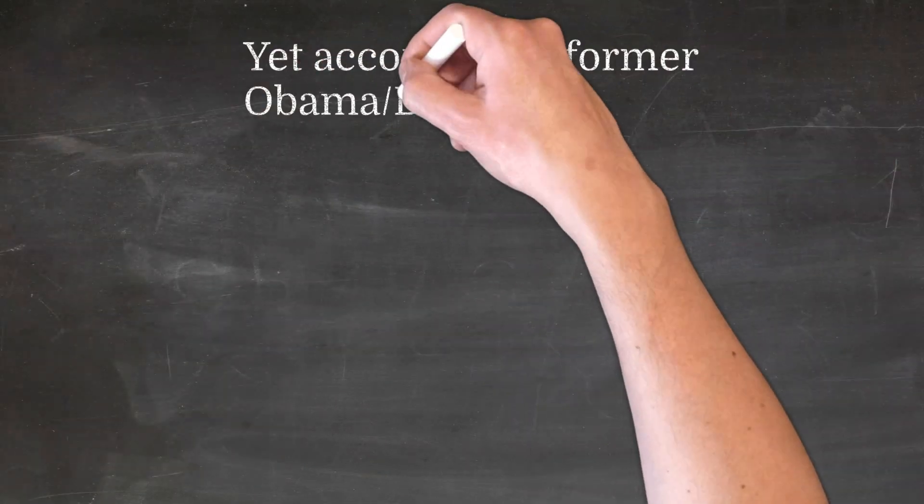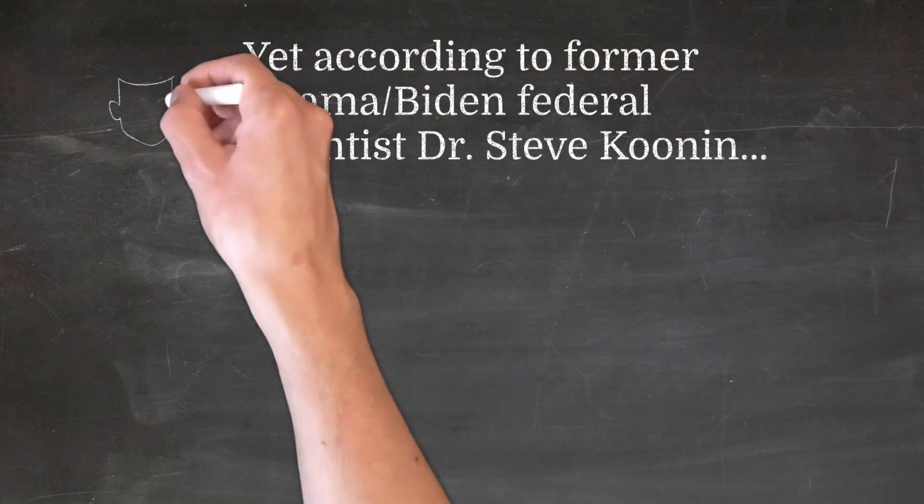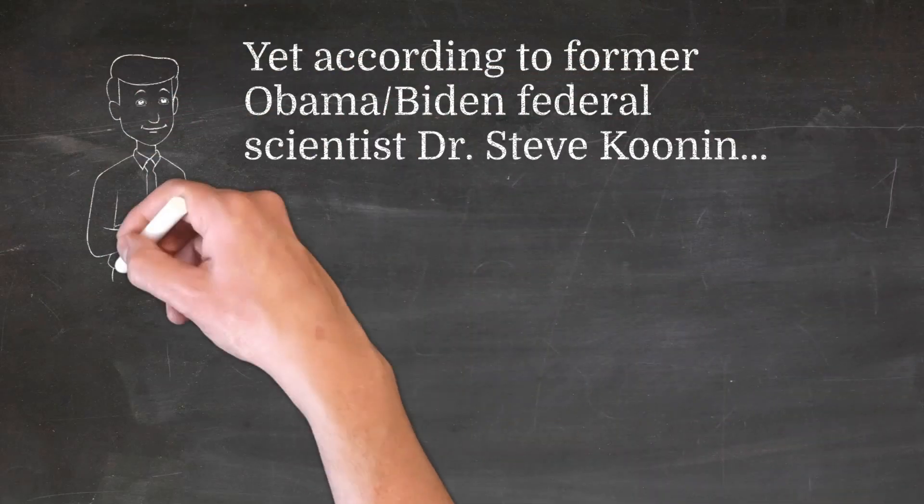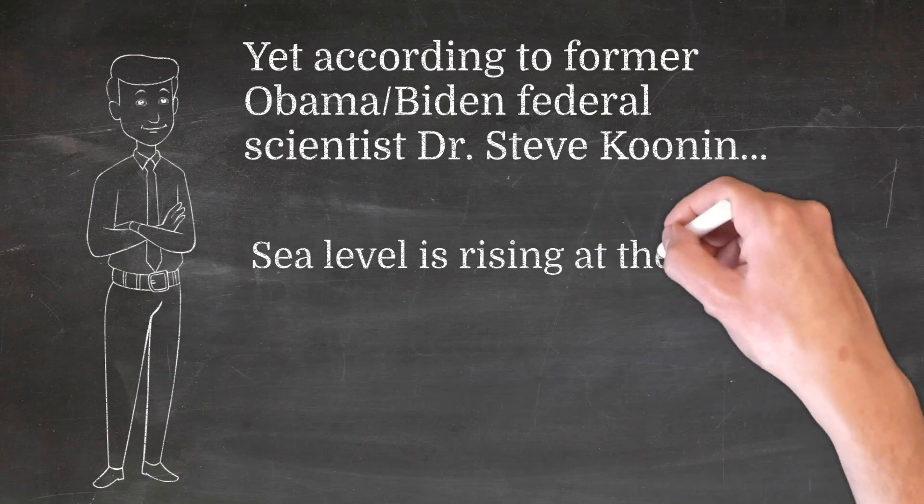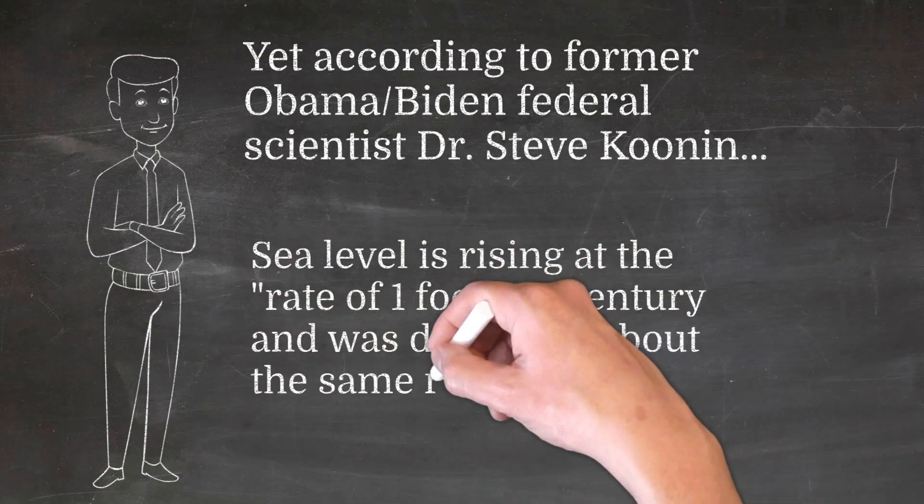Yet according to former Obama-Biden federal scientist, Dr. Steve Koonin, sea level is rising at the rate of one foot per century and was doing it at about the same rate 80 years ago.